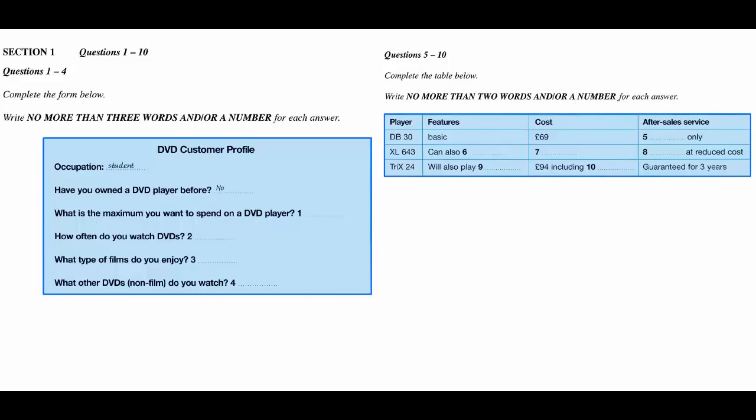Okay. Let me explain a bit to you about the DVD players that are in your price range. First, there's the DB30, which has only got basic features, but it is a bargain at £69. Now, all the DVDs come with an after-sales service that starts when the guarantee runs out. As it's so cheap, the DB30 comes with a limited after-sales service, as it only includes parts. You would have to pay for most of the repair. Seems okay.